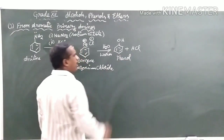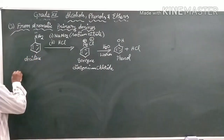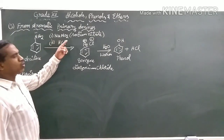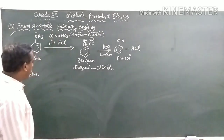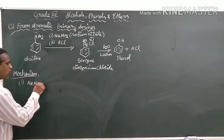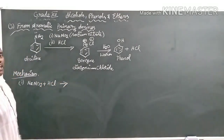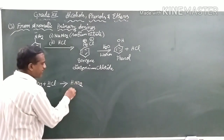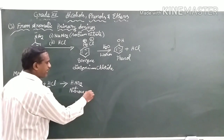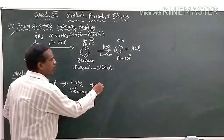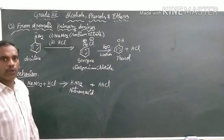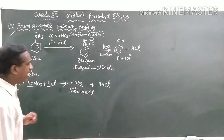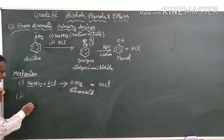Let us see how the mechanism takes place. Initially, the reagents are sodium nitrite and hydrochloric acid. When sodium nitrite and hydrochloric acid react, the hydrochloric acid displaces sodium, forming HNO₂ — nitrous acid — and sodium chloride as a byproduct. Nitrous acid is the main important acid needed in this reaction.